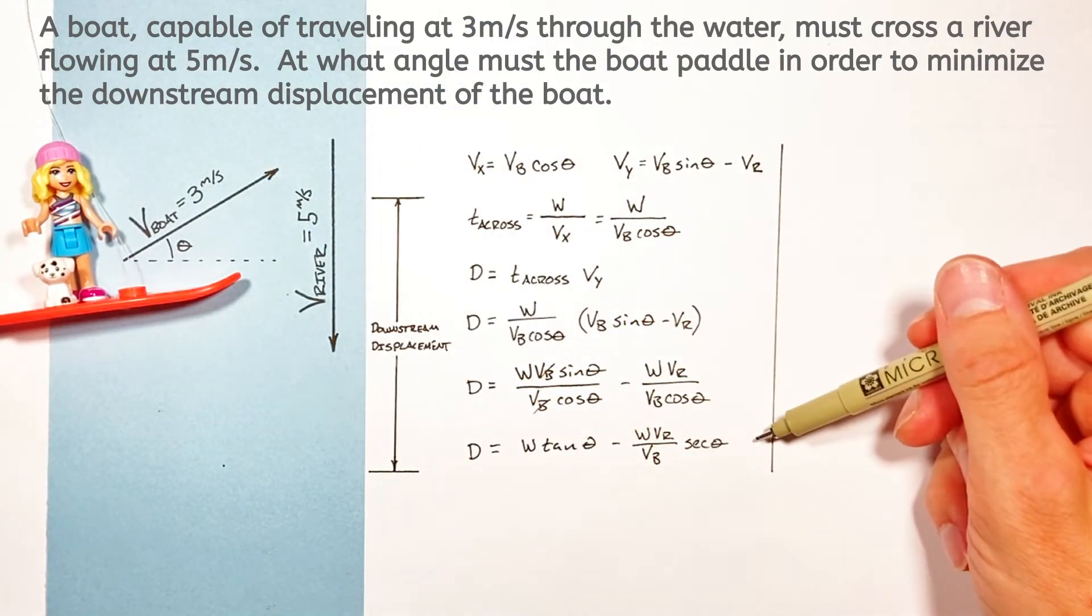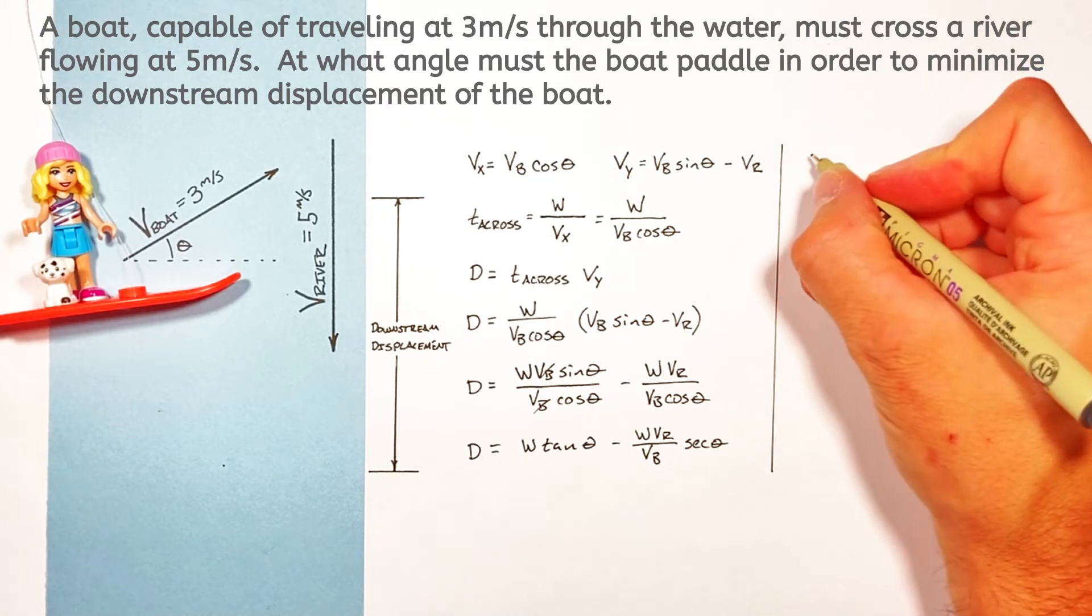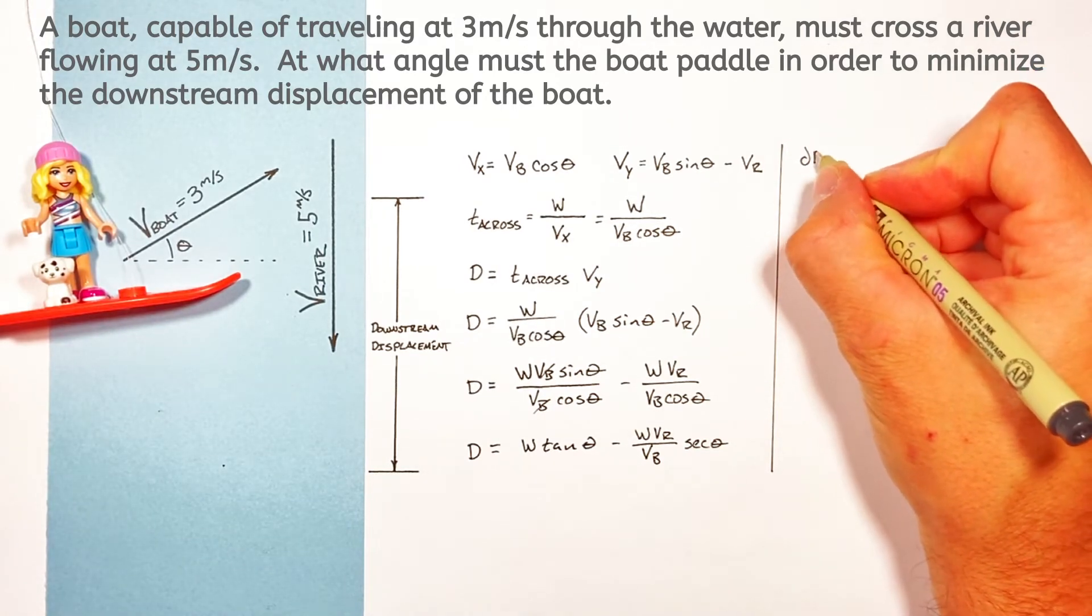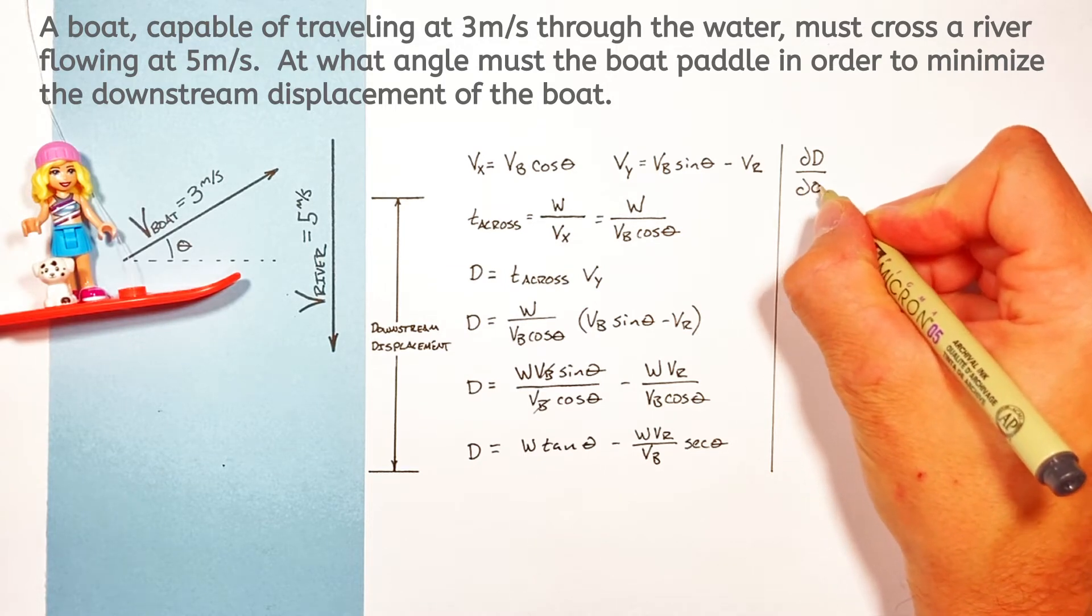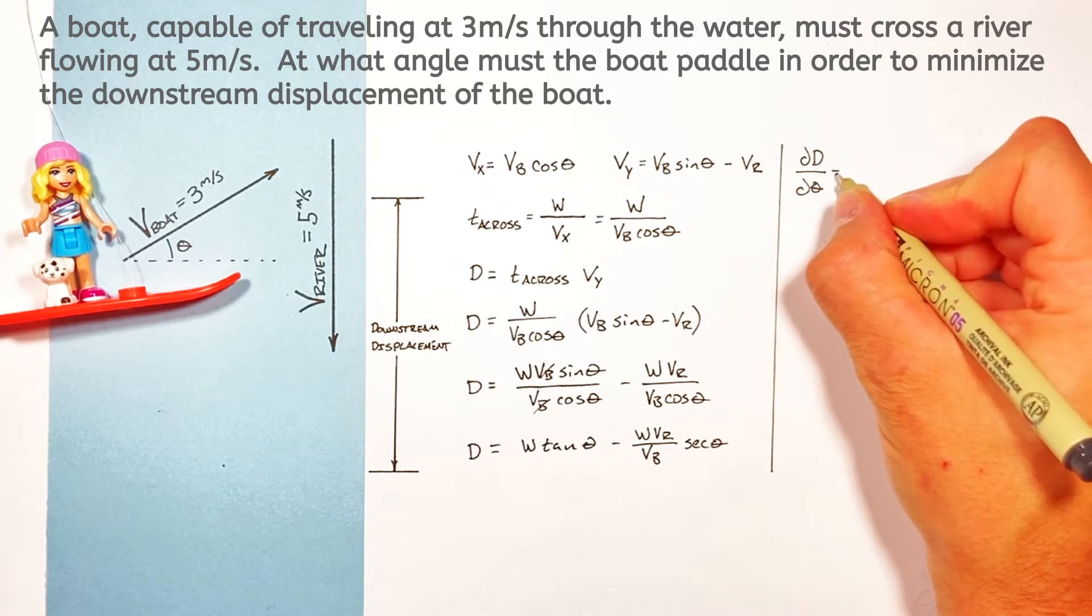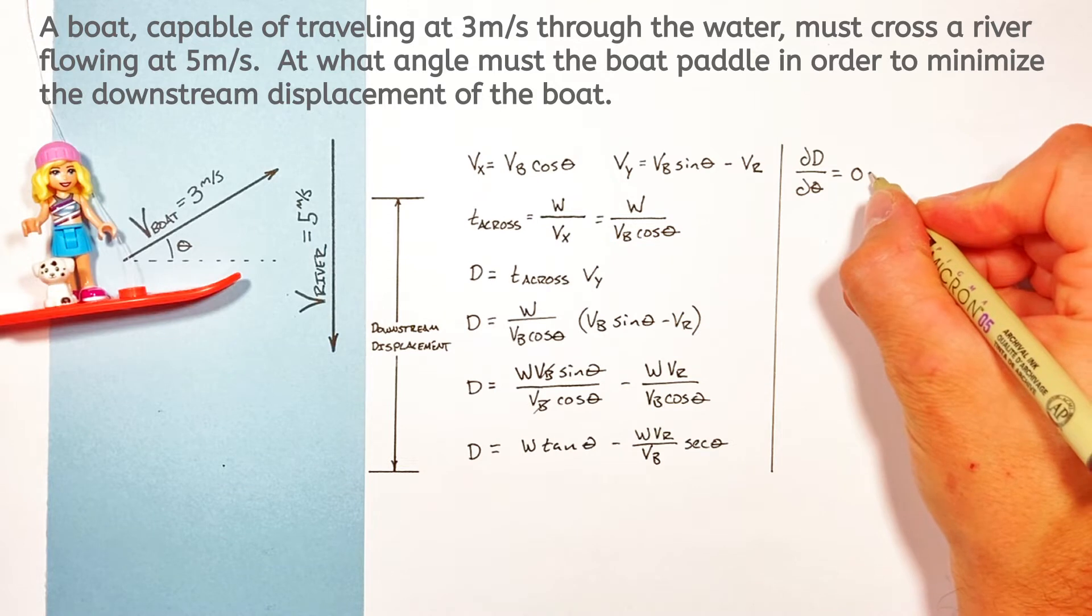And remember it's this downstream displacement which we're trying to minimize. Now to minimize a function we're gonna take the derivative of the downstream displacement with respect to the angle and we're gonna set that derivative equal to zero.